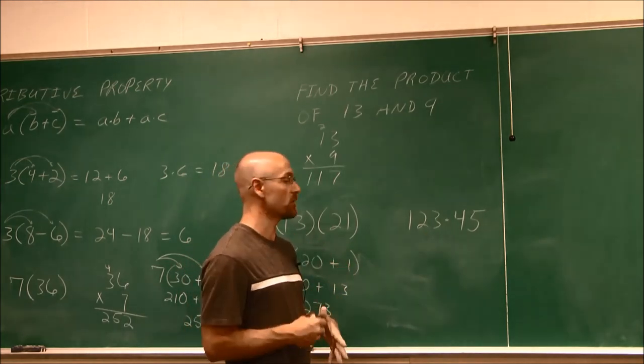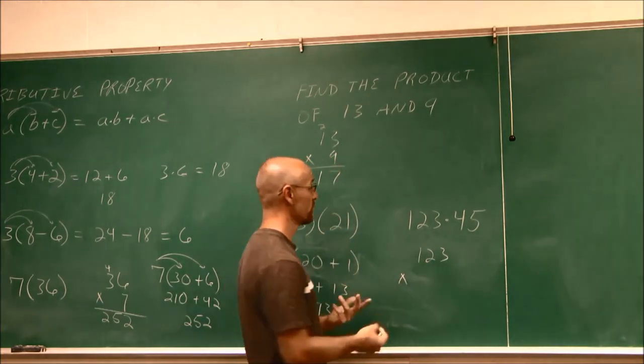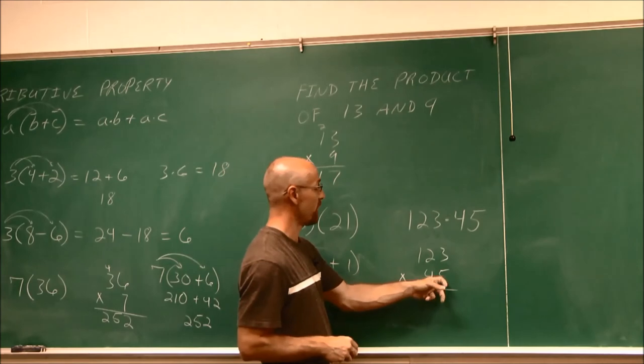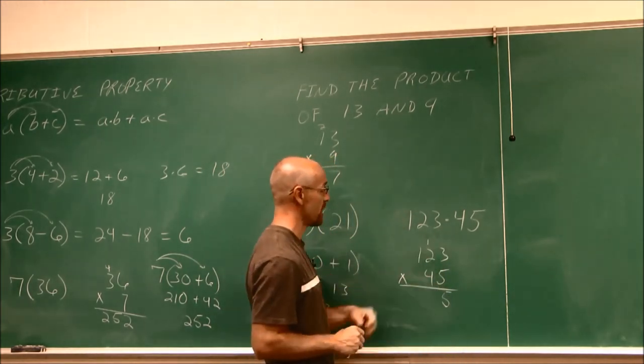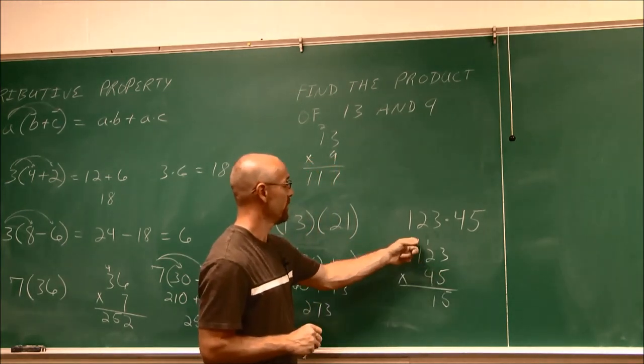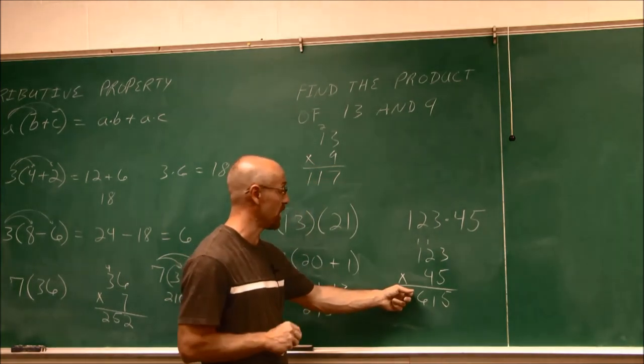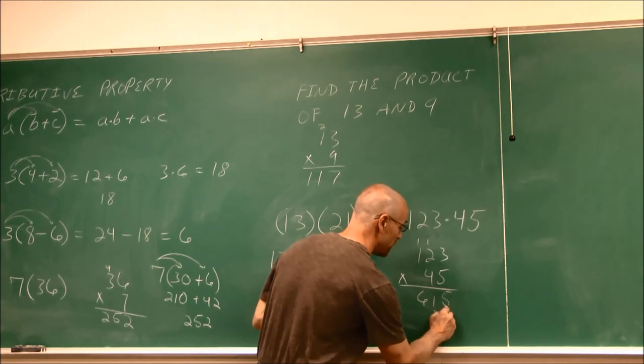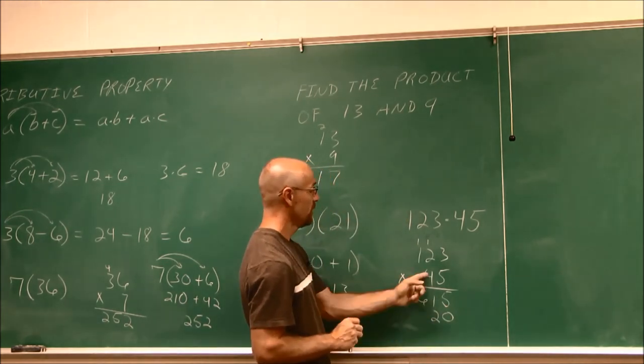5 times 3 is 15. Carry the 1. 5 times 2 is 10, and 1 is 11. Carry the 1. 5 and 1 is 6. This is a partial product. Then we go to the tens place. 4 times 3 is 12. I'm going to put a 0 there just as a whole placeholder, because we're in the tens spot. 4 times 3 is 12. I carry the 1.